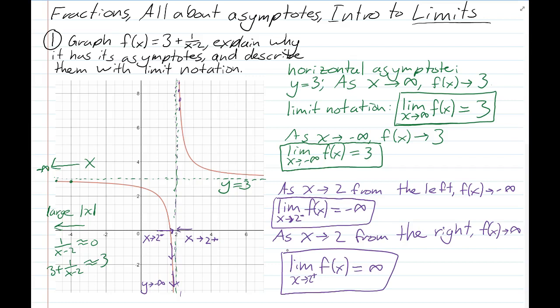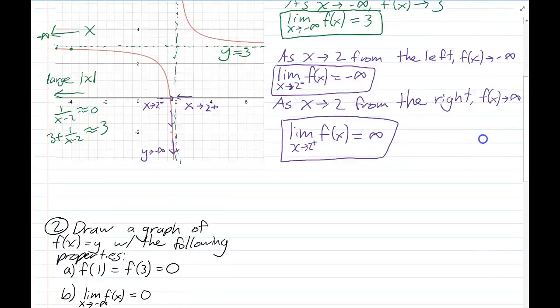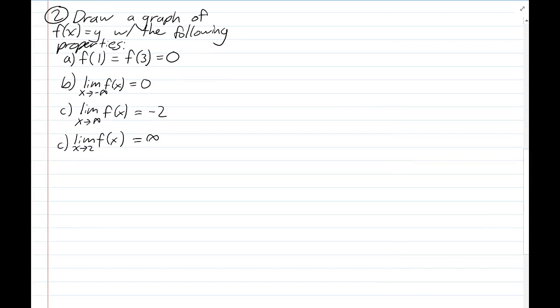That's one quick example of limit notation. It's good to think about things by breaking down the different parts of an equation — what happens to x minus 2 when x is really big, really small, or really close to 2, and then what happens when you do 1 divided by that, and then 3 plus those things. Breaking down function behavior this way is a really handy tool that will help you understand a lot in calculus.